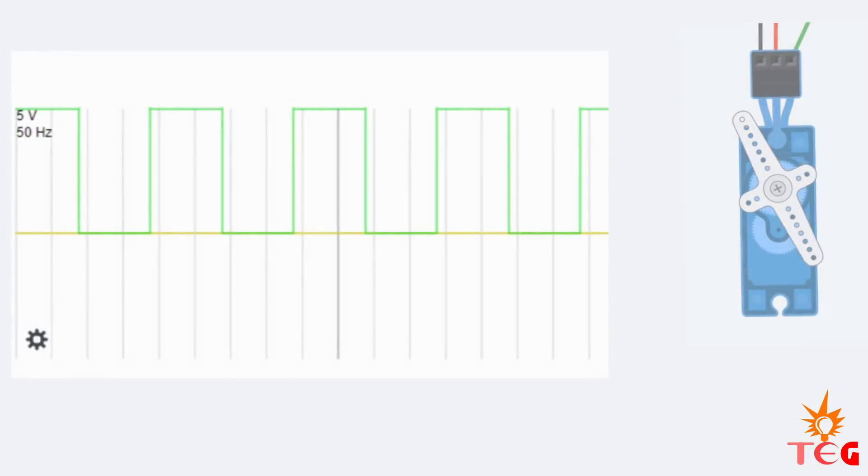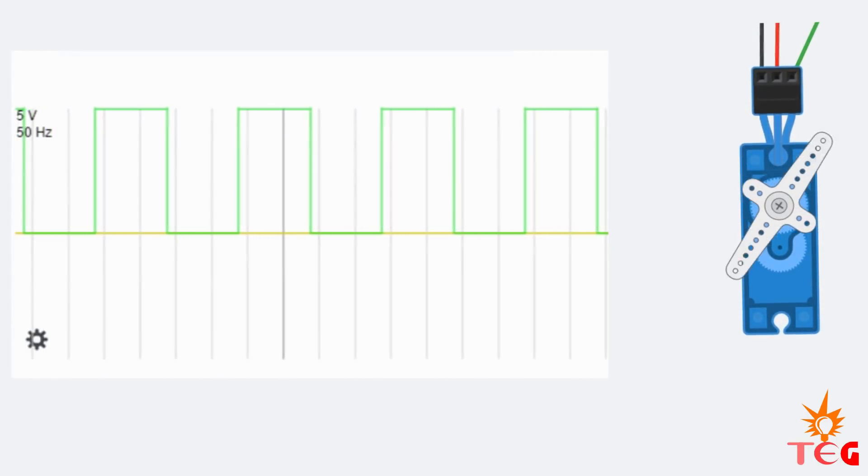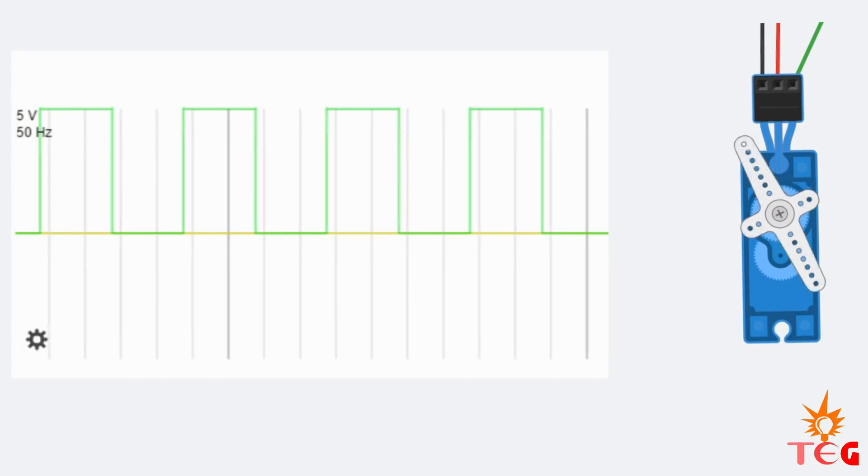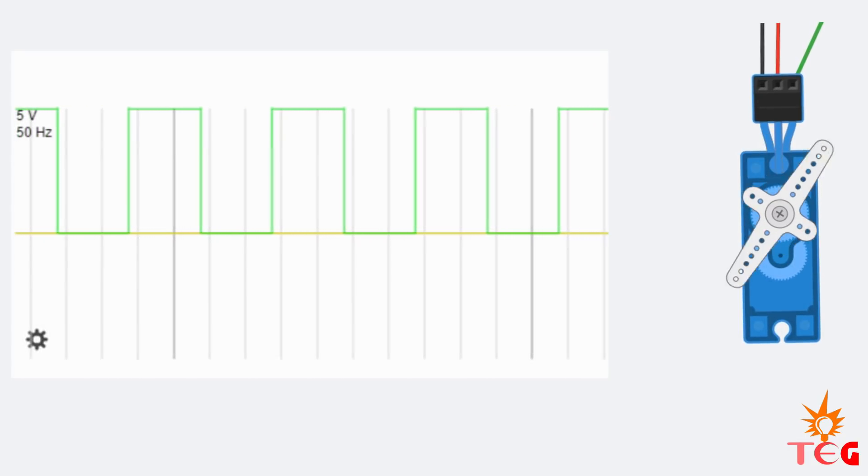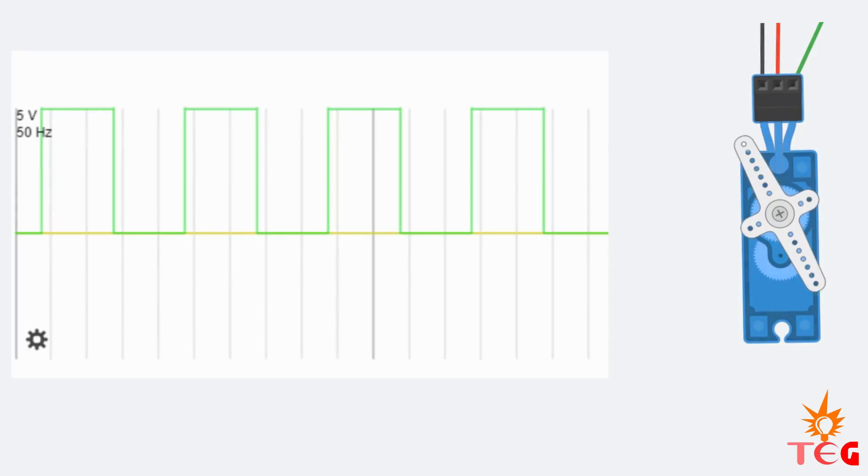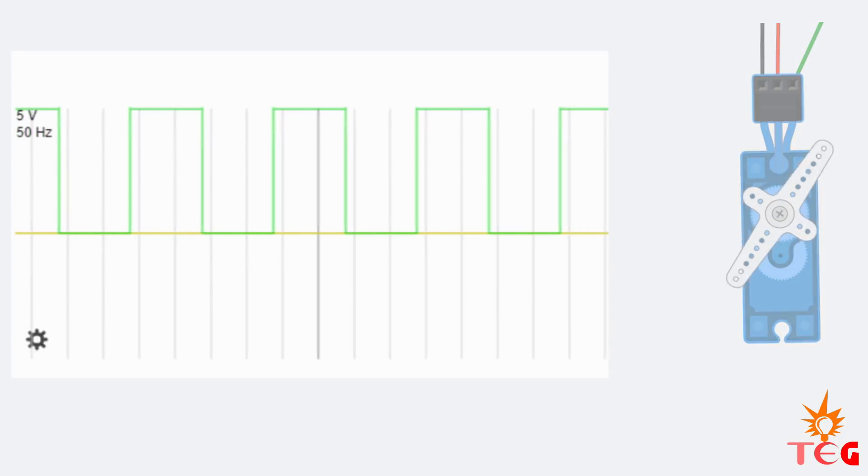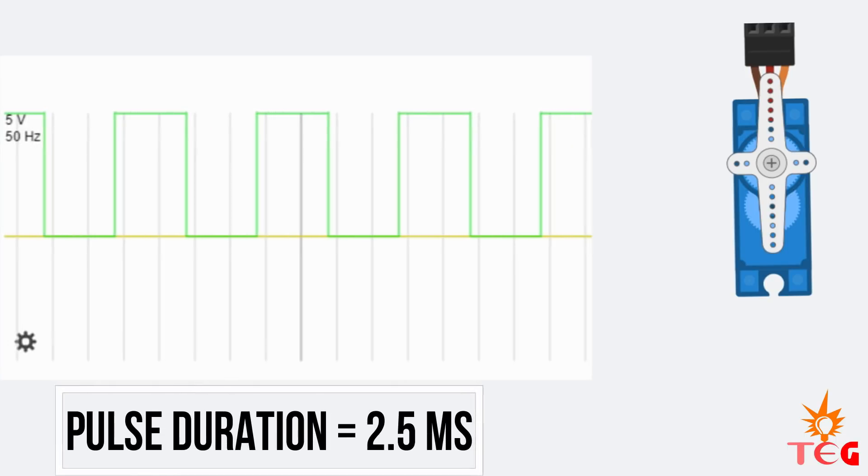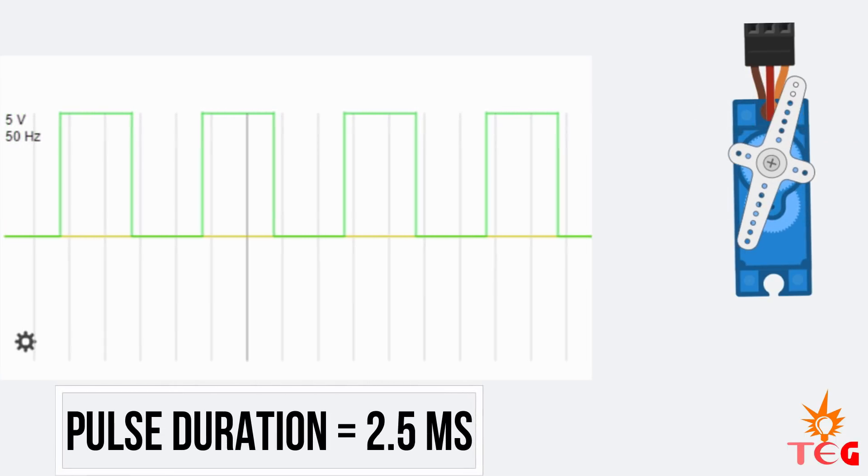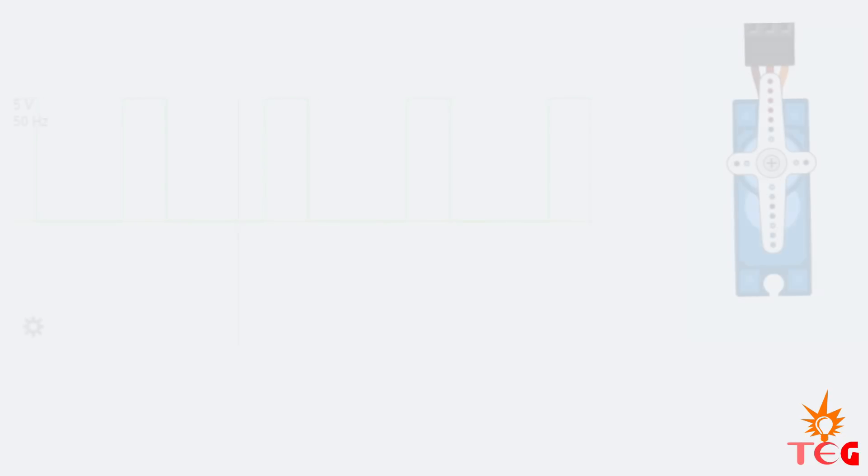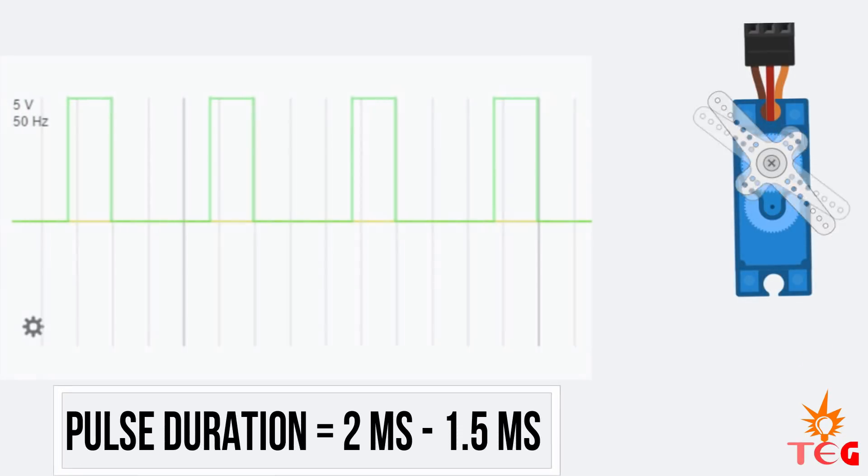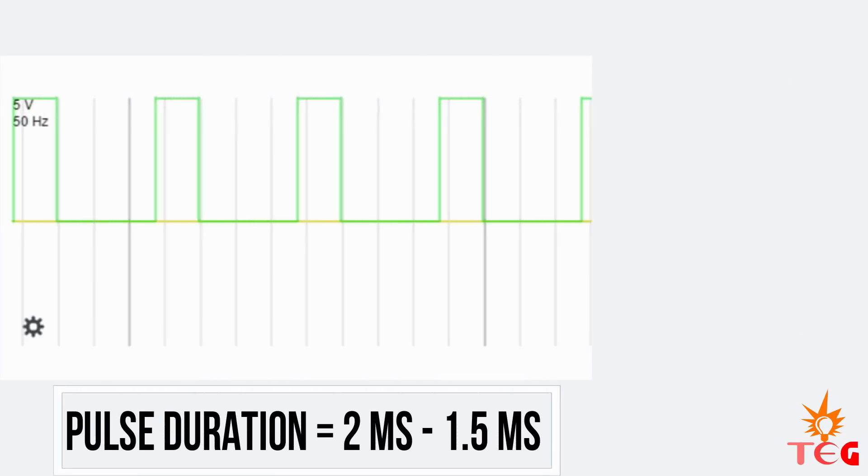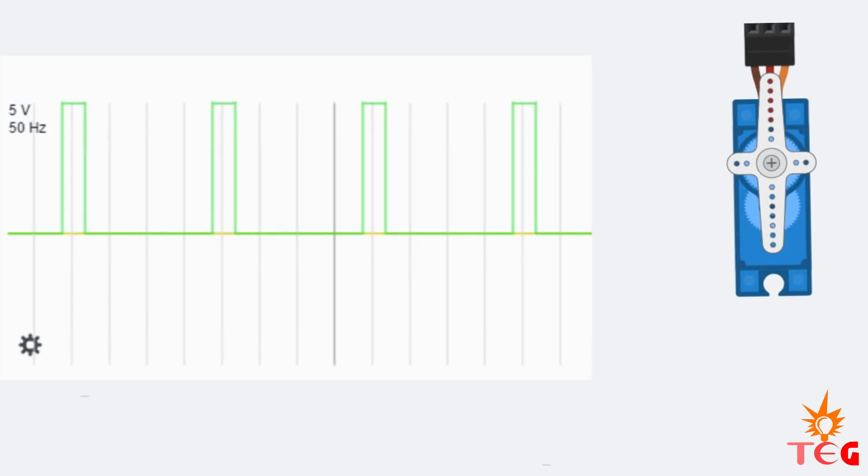As I have already mentioned, servo motors are controlled using PWM pulses. The frequency of this PWM signal must be around 50 Hz, and the width of the pulse determines the angular position of servo motor. So if you want angular position to be 180 degrees, then pulse duration must be around 2.5 ms. For 90 degrees, 2 ms, and for 0 degrees, 0.5 ms.